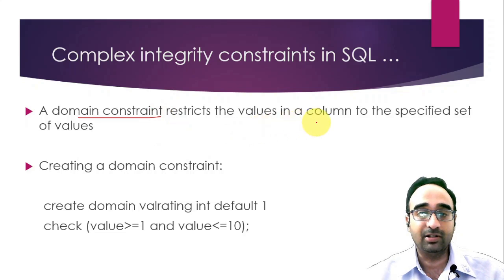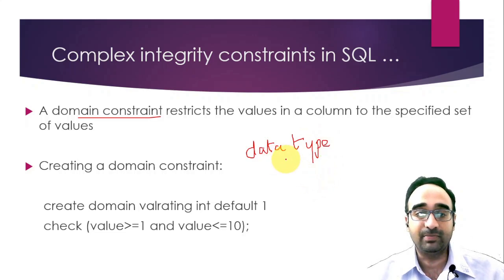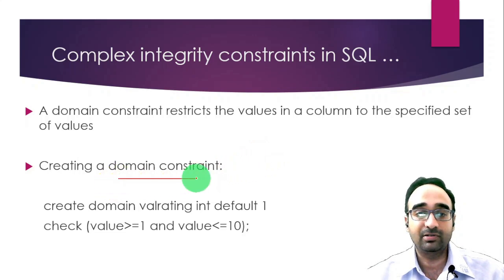The second constraint is the domain constraint. Here, 'domain' means the range of values a particular column can take. You already know about data types — for example, integer has a minimum and maximum value. If you want to create a new domain, essentially a new data type with your own specified range, you can use domain constraints.